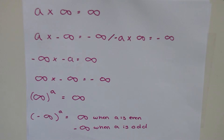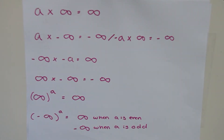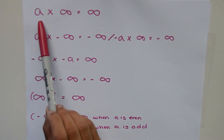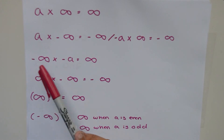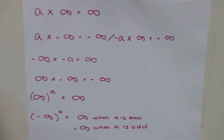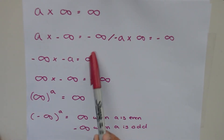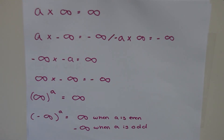Our next case: a finite number times negative infinity. The negative sign changes the outcome — positive times negative equals negative infinity. For example, 4 times negative 3 equals negative 12, so the negative infinity grows more negative. We can also flip this: multiplying a negative number (negative a) by positive infinity, and since negative times positive is negative, we are left with negative infinity.